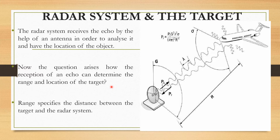If you are receiving the echo signal, that means there is something reflecting it — detection is done. The radar system determines three things: first, whether the target is present or not; second, the target range; and third, the target location. The radar range is the distance of the target from the radar receiver. The range is determined by measuring the time taken by the radiated signal to reach the object and come back to the radar.